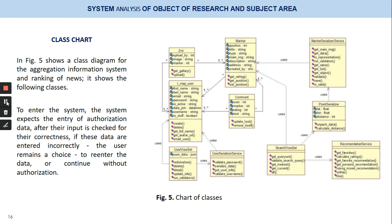Class chart: figure five shows a class diagram for the aggregation information system and ranking of news. It shows the following classes. To enter the system, the system expects entry or authorization data. After their input is checked for correctness, if the data are entered incorrectly, the user is reminded of a choice to re-enter the data or continue without authorization.